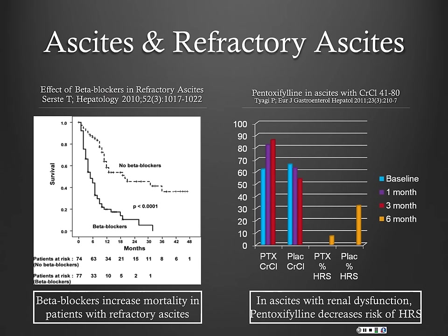Two other important medications regarding refractory ascites: first, beta blockers. A lot of our patients with cirrhosis who have had variceal bleeding or have varices are on non-selective beta blockers for primary prophylaxis. There's been considerable data in the last 5 to 10 years about increased mortality associated with non-selective beta blockers in patients with refractory ascites.